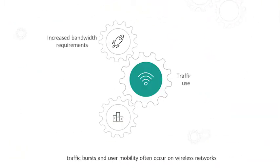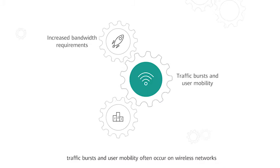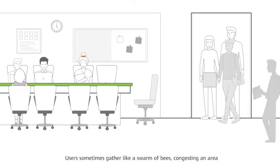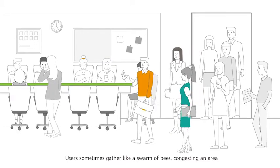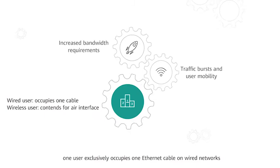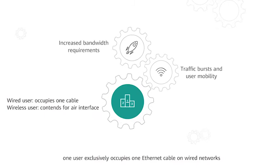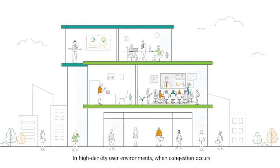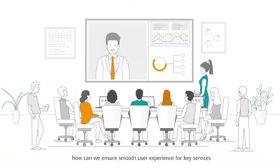Secondly, traffic bursts and user mobility often occur on wireless networks. Users sometimes gather like a swarm of bees, congesting an area. Thirdly, one user exclusively occupies one Ethernet cable on wired networks. In contrast, users contend for air interface resources on wireless networks. In high-density user environments, when congestion occurs, how can we ensure smooth user experience for key services?